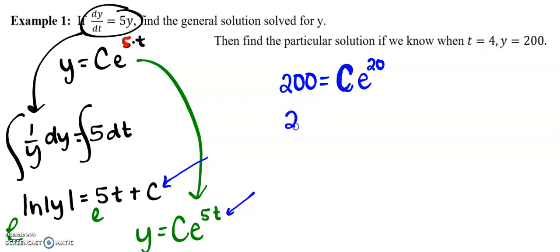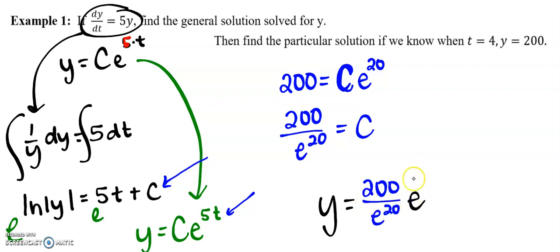All right. So then it says that we're supposed to find the particular solution if we know when t is 4, y is 200. I personally would like to find C from this line. So if we go through and we find our C value, we know that the 200 is equal to C e to the 20th, because 5 times 4 is 20, which means that c itself is equal to 200 over e to the 20th.